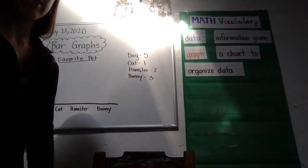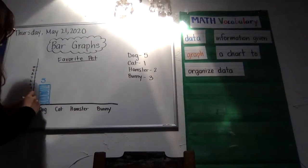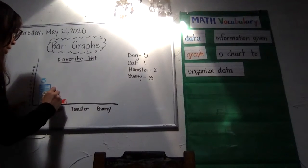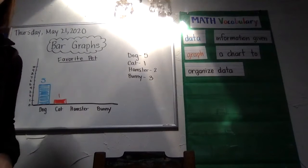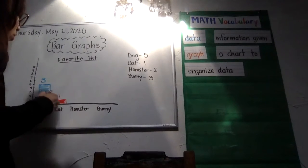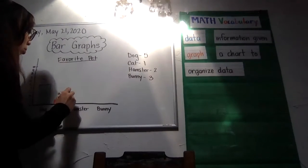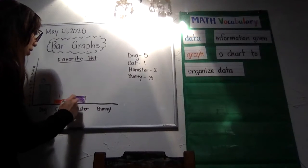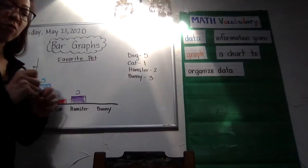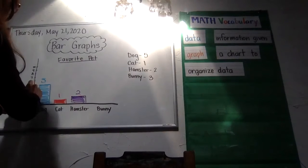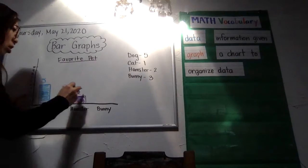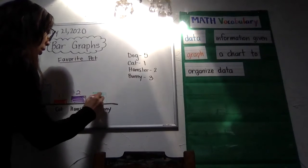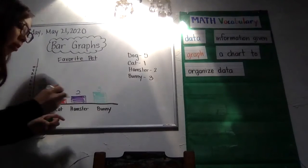We only had one person vote for a cat, so we'll find the one, draw a line, and fill in the bar. Two people voted for hamsters, so we'll find the two and fill in our bar. And three people voted for bunnies, so we'll find the three on our chart, come across, and make a bar that goes up to the three, and put three right above it.